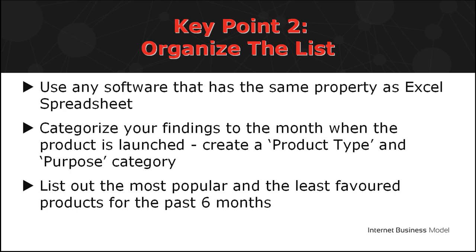A hybrid product is a combination of two different product types. For example, a web-based software that generates graphics and logos. The last category and column is Purpose. For example, is the product created for traffic or list building, email marketing, SEO, or logo and graphics creation?